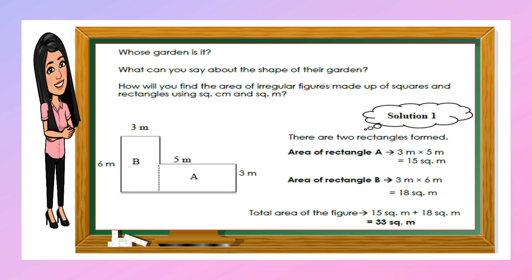The first one is rectangle A. We have 5 meters and 5 meters and 3 meters. So the area for rectangle A: length times width — 5 times 3 equals 15 square meters. For solution two, we have rectangle B. We need to multiply 3 meters by 6 meters to get 18 square meters. The total area: 15 plus 18 equals 33 square meters.